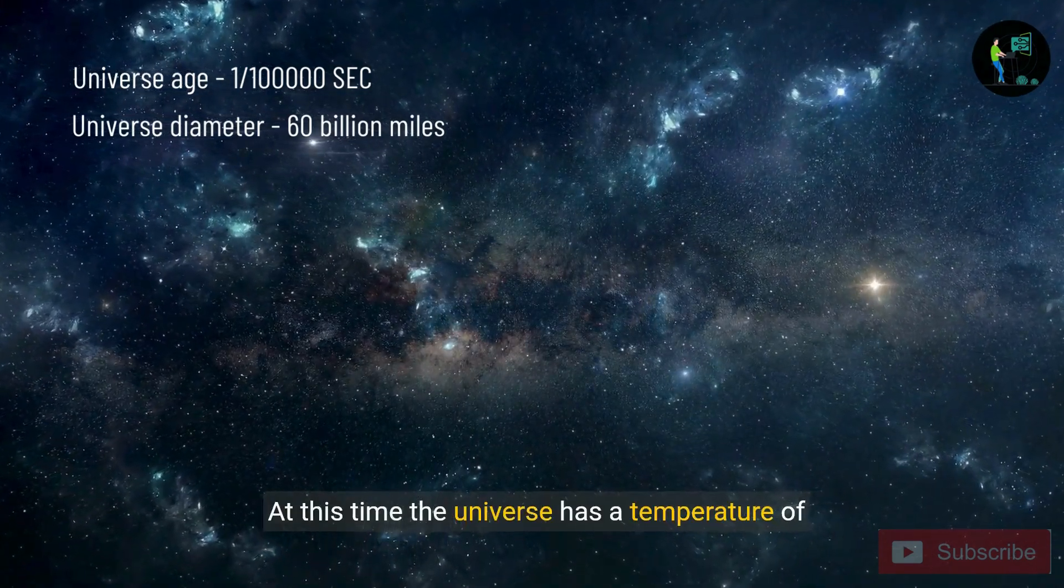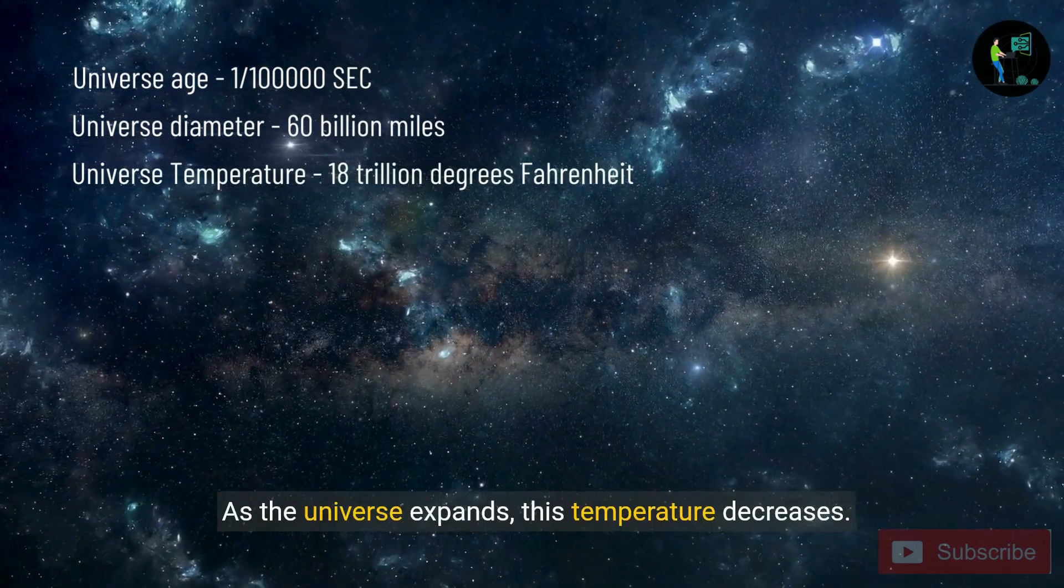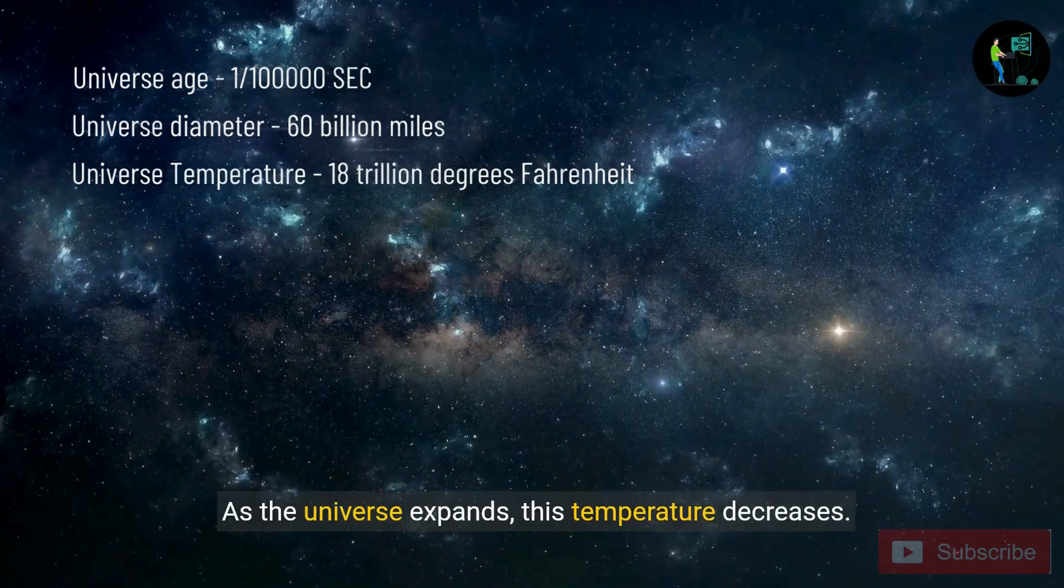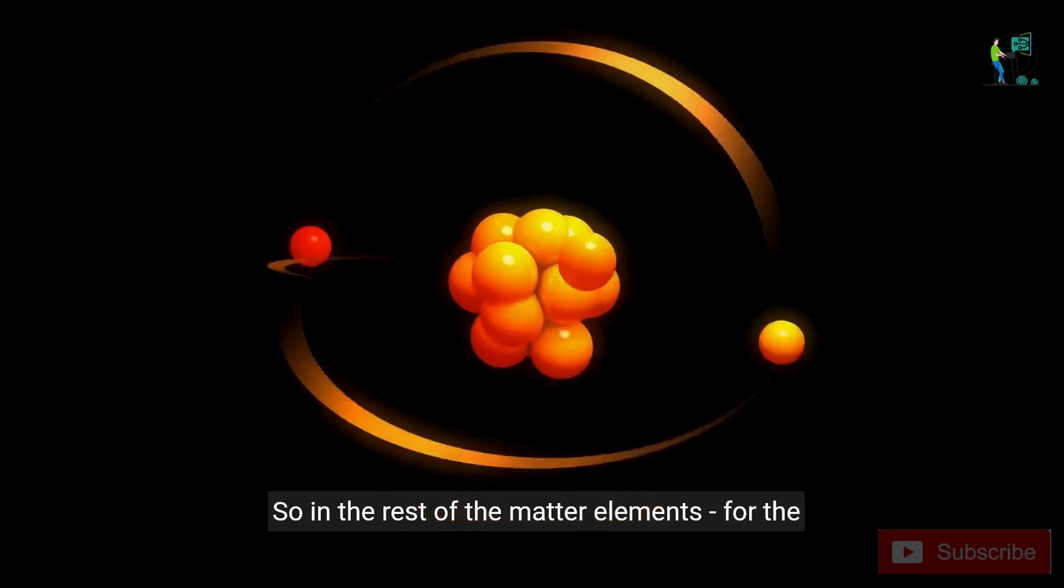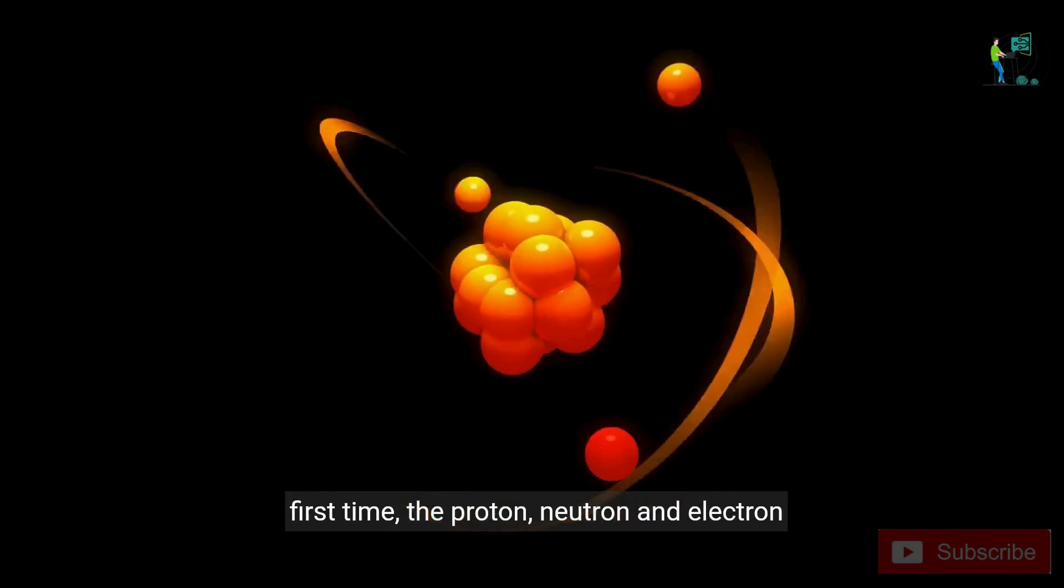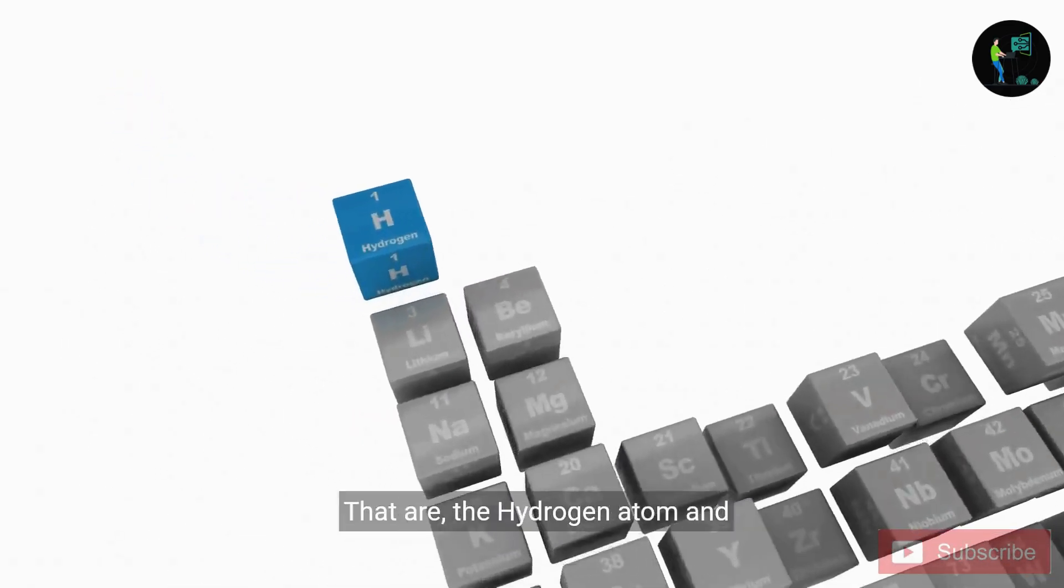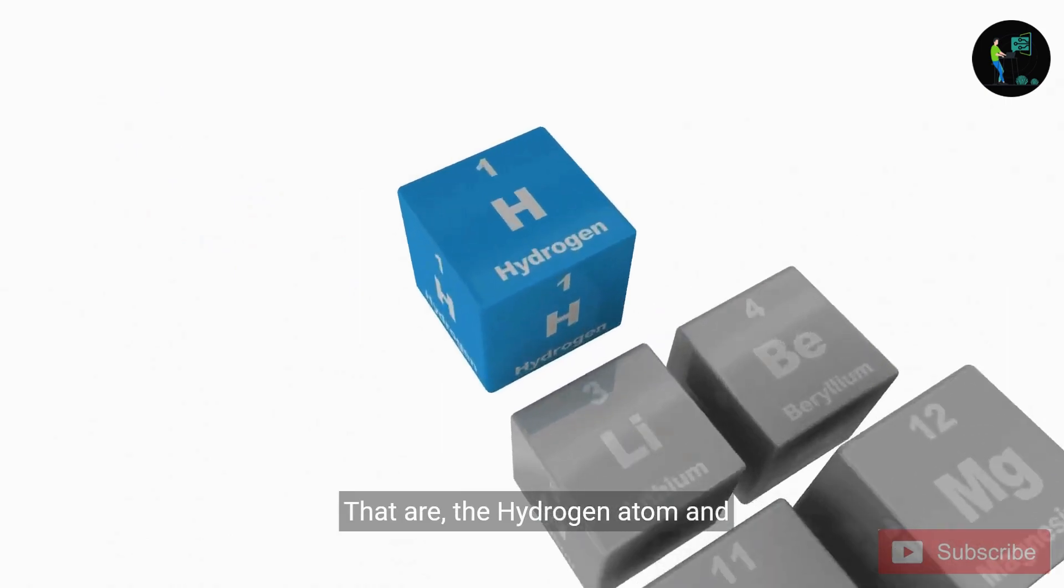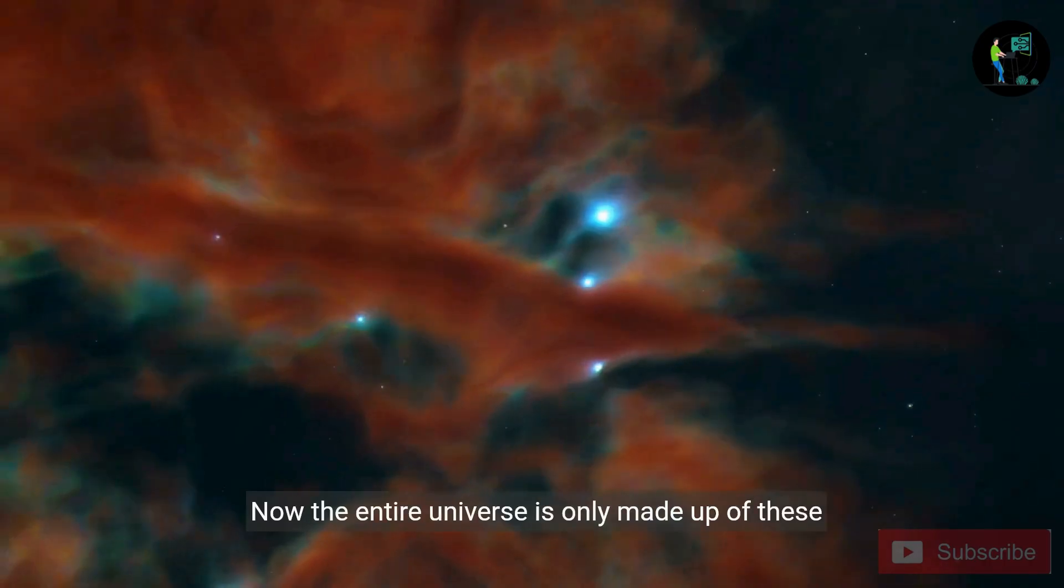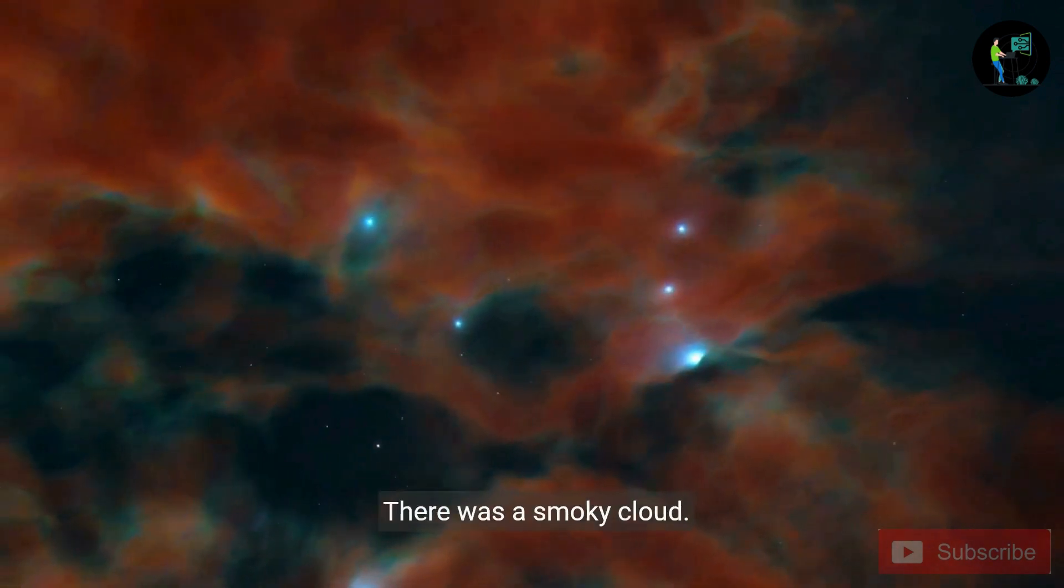At this time, the universe has a temperature of approximately 18 trillion Fahrenheit degrees. As the universe expands, this temperature decreases. So in the rest of the matter elements, for the first time, the proton, neutron, and electron join together to form the lightest atoms in the periodic table. That are the hydrogen atom and the helium atom. Now the entire universe is only made up of these hydrogen and helium atoms. There was a smoky cloud.